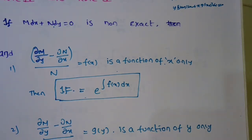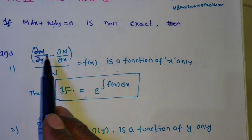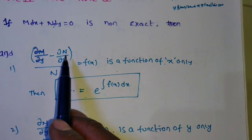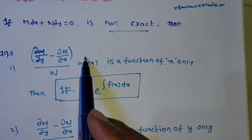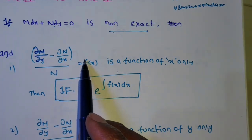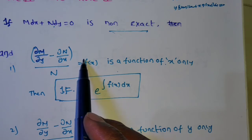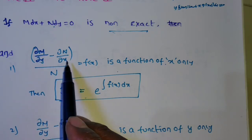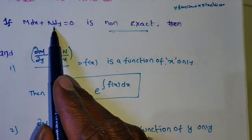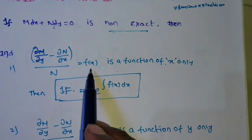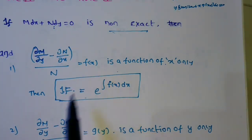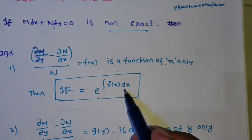To repeat: find ∂M/∂y and ∂N/∂x. If they are not equal, the equation is non-exact. Verify inspection, homogeneous, and Rule 3. If none apply, find ∂M/∂y minus ∂N/∂x, then divide by N. If you get a function in terms of x alone, the integrating factor is e to the power of integral f(x) dx.